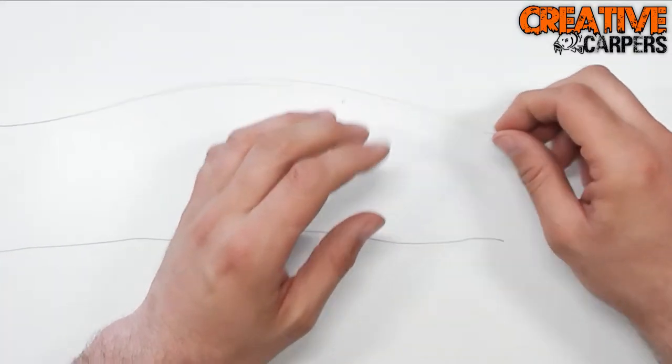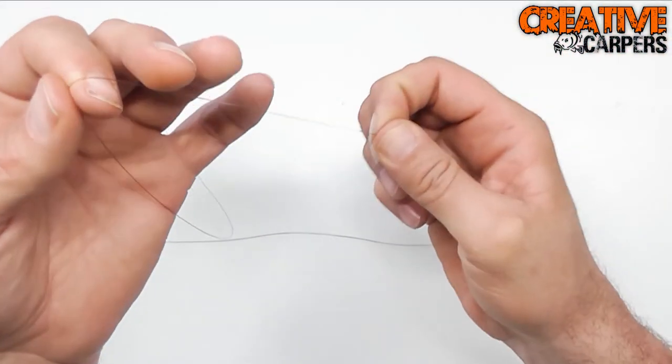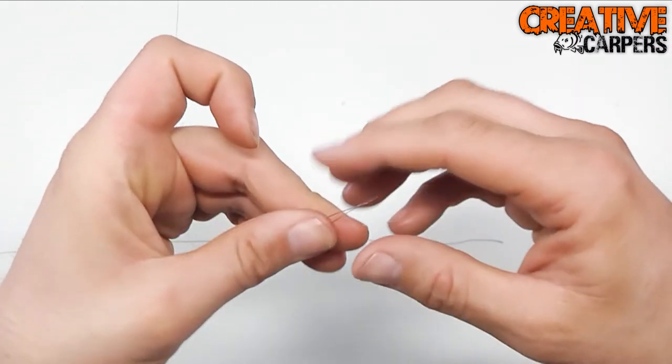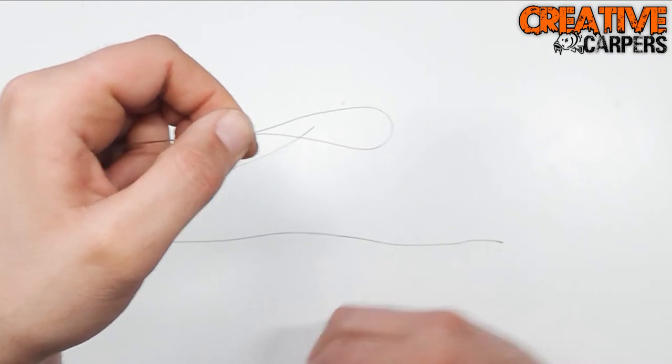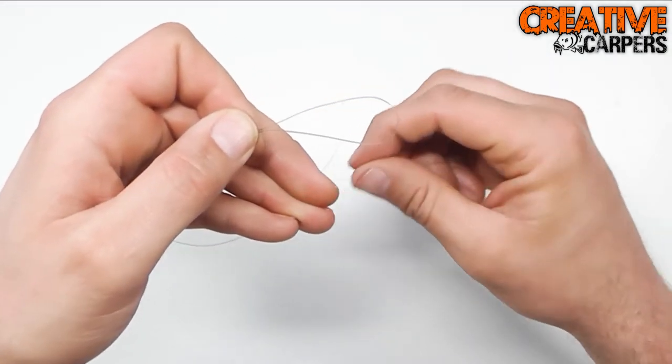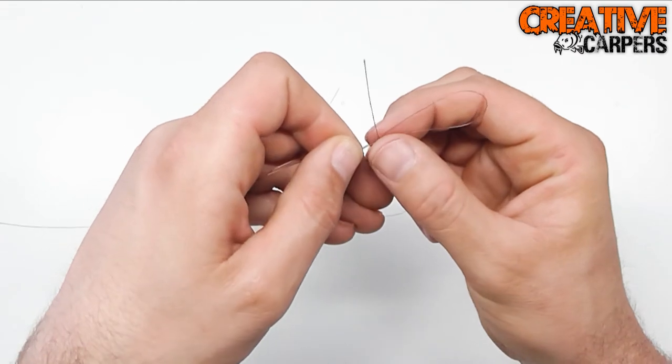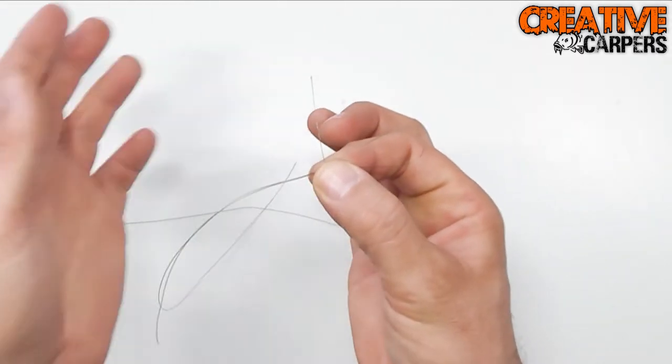To begin tying the Albright knot, just take the stiffer of your two materials, fold it around your finger and just make a loop. Take the more supple of the two materials, in this case it's braid, just thread that through, clamp it in your fingers like so.